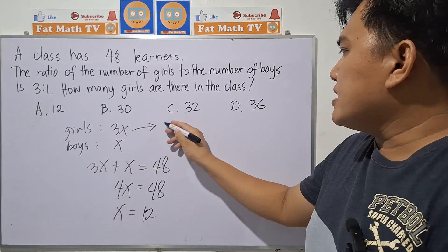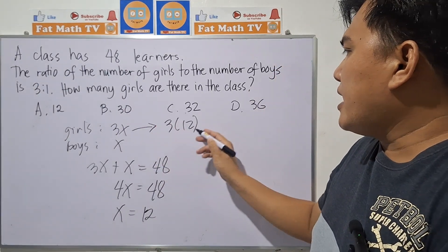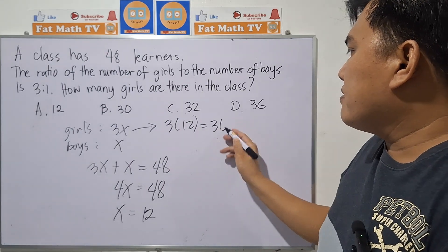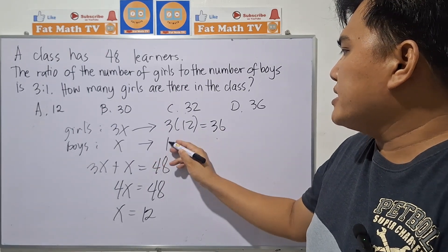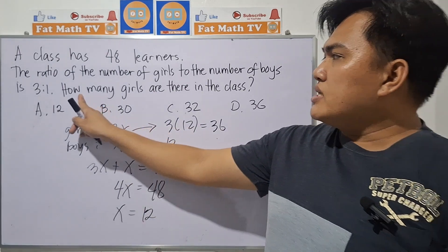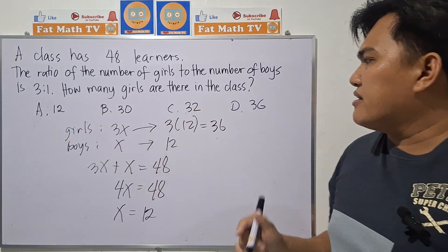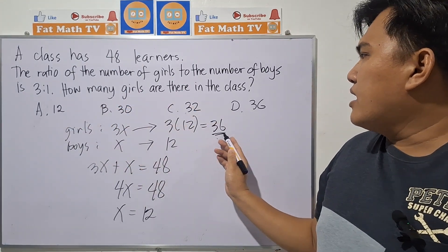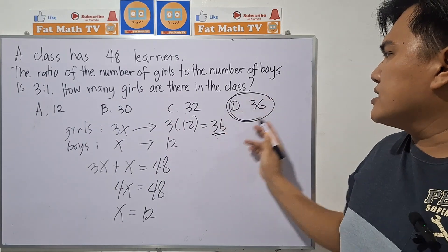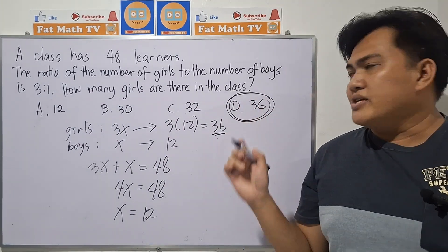So the number of girls is 3 times x, that's 3 times 12, which equals 36, and the number of boys is 12. The question here is how many girls are there in the class, so there are 36 girls in the class. Letter D.